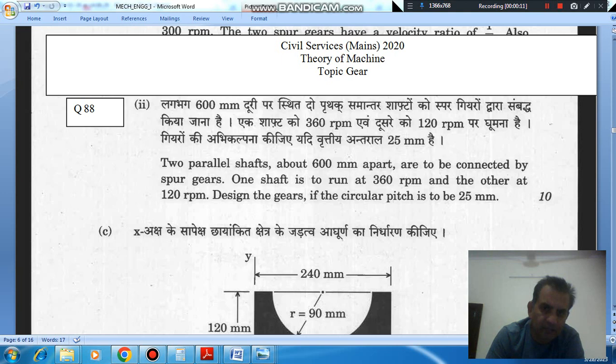Two parallel shafts about 600 mm apart are to be connected by spur gear. One shaft is to run at 360 RPM and the other at 120 RPM. Design the gears if the circular pitch is to be 25 mm.